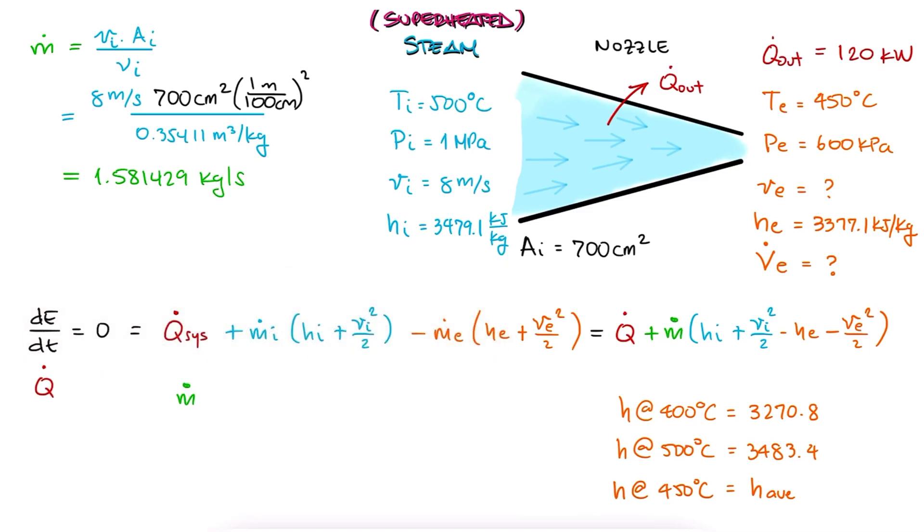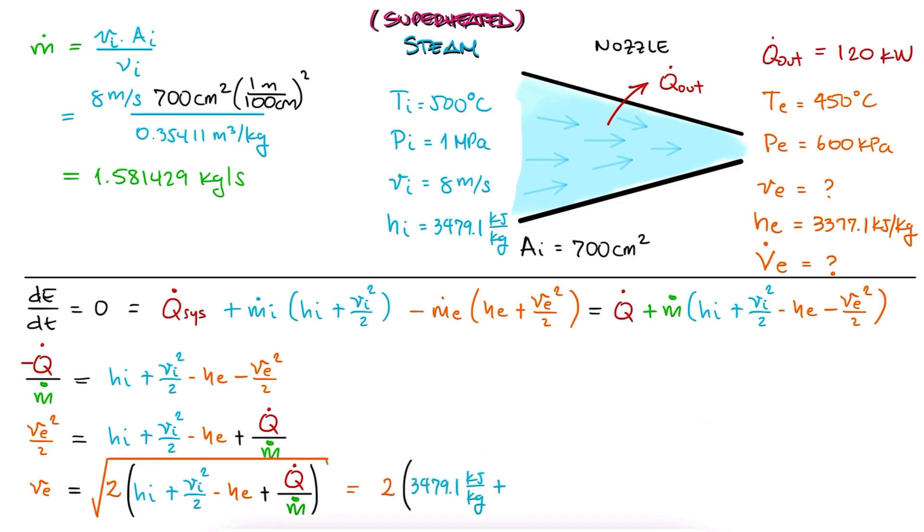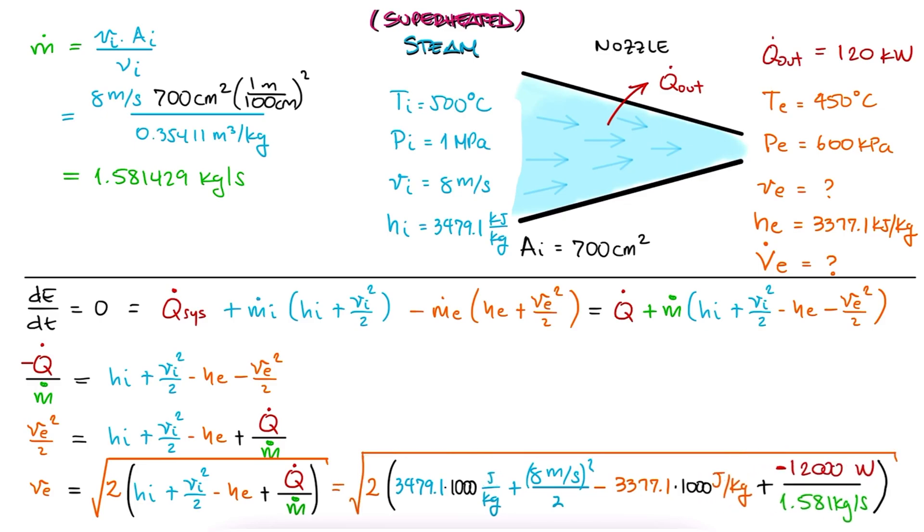With this information, we carefully solve for the velocity of the fluid at the exit, substitute all the values that we found and that were given, including assigning a negative sign to the heat coming out of the system, and most importantly, account for the units that we pointed out during the flow work main lecture video, link below. We do this to find that the exit velocity is 229 meters per second.